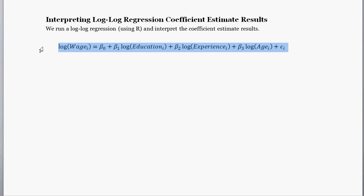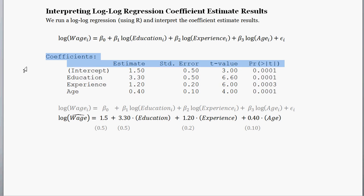Let's say we have this model, we collect some data and run a few regressions and come up with the following. These results you might get from something like R software, regression results that look something like this. For our estimate of beta naught, we have the intercept here, 1.5. For our estimate of beta 1, we have the education coefficient here, 3.3.